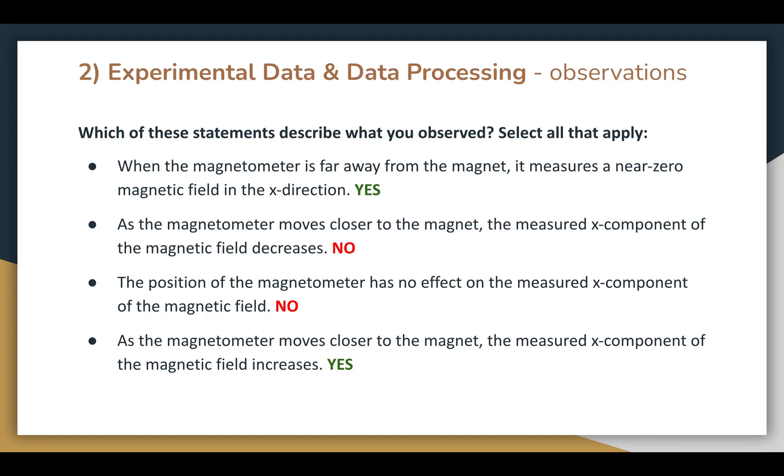Of the observations shown here, only the first and fourth statements describe what I observed in my experiment. I noticed that when the magnetometer was far away from the magnet, Bx was close to zero, and that when it was brought closer, Bx increased as expected.